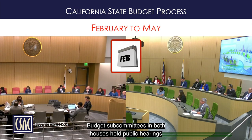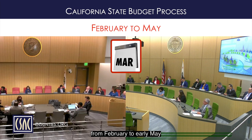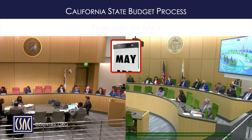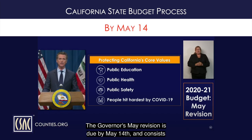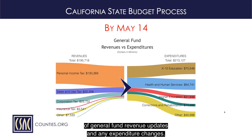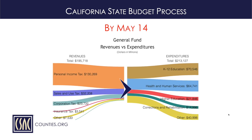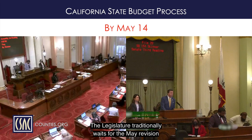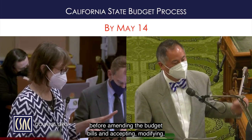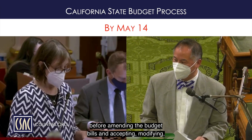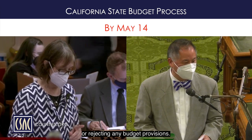Budget Subcommittees in both Houses hold public hearings from February to early May to review the January 10th proposal. The Governor's May revision is due by May 14th and consists of general fund revenue updates and any expenditure changes. The Legislature traditionally waits for the May revision before amending the budget bills and accepting, modifying, or rejecting any budget provisions.